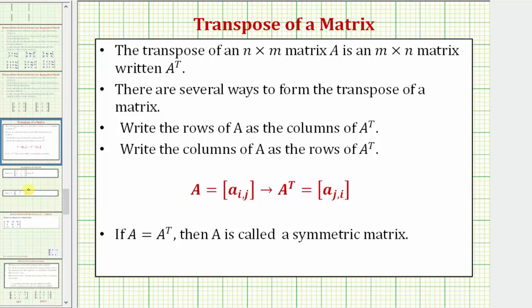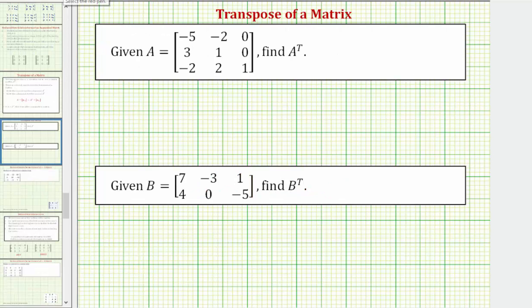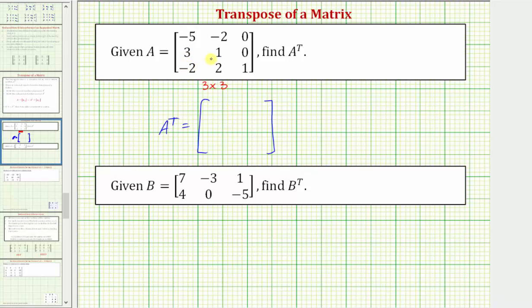Going back to our two examples, notice how the given matrix, matrix A, is a three by three matrix. So if we interchange the rows and columns, we're still going to have a three by three matrix for A transpose. So A transpose is going to be a three by three matrix. To form A transpose, we'll write the columns of matrix A as the rows of A transpose.